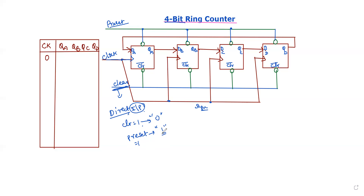Another input is called the preset input — it automatically sets all the flip-flops to one. These are called direct inputs. Now let us start the process of counting the numbers.